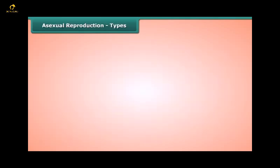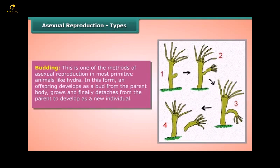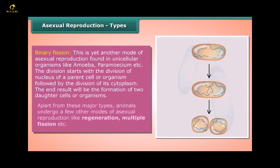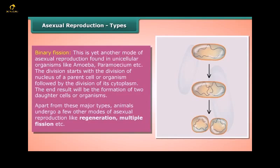Asexual Reproduction Types: Budding is a method of asexual reproduction found in primitive animals like Hydra, in which an offspring develops as a bud from the parent body, grows, and finally detaches to become a new individual. Binary fission is another mode of asexual reproduction found in unicellular organisms like Amoeba and Paramecium; the nucleus divides first, followed by the cytoplasm, resulting in two daughter cells. Other modes of asexual reproduction in animals include regeneration and multiple fission.